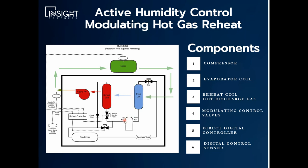In a hot gas reheat system, a portion of that high pressure, high temperature gas is actually able to be bled through a reheat coil, which is a physical coil located downstream of the evaporator, which reheats that air back up to a neutral condition. It actually forms liquid, which is then fed all the way back through the condenser to make sure that it's fully condensed, and this refrigeration process repeats itself.